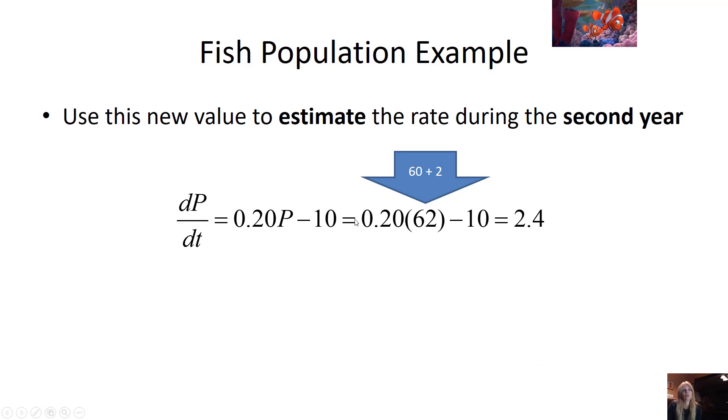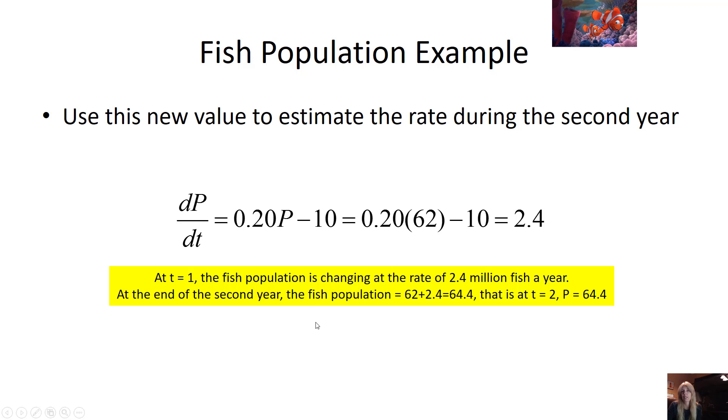So now I can use this to estimate the rate during the second year. So my population has changed. My rate's going to change. So notice even my rate went up to 2.4. So at t equals 1, the fish population is changing at the rate of 2.4 million fish per year.